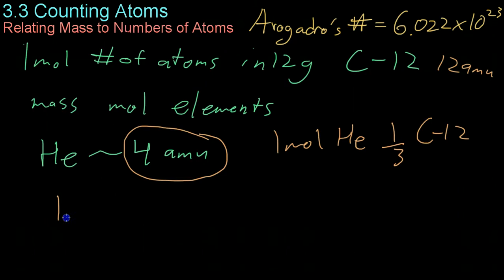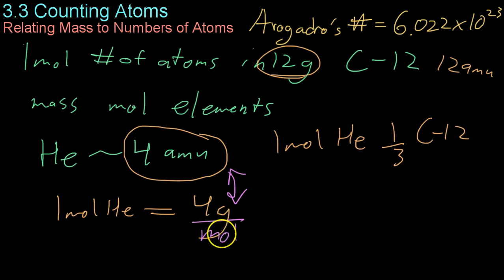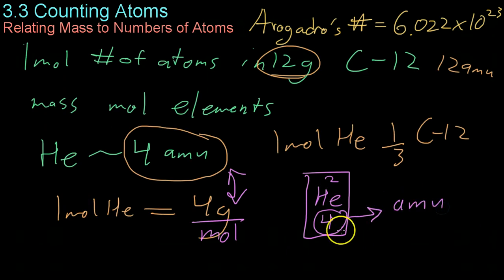That is, one mole of helium, instead of weighing 12 grams, will weigh 4 grams. And you'll notice that the atomic mass of helium is numerically equal to the molar mass, that is, the grams per mole of helium. And that corresponds equally to this number listed below the atomic symbol on the periodic table. This 4 both refers to the atomic mass in atomic mass units and the molar mass, that is 4 grams for every mole of helium.